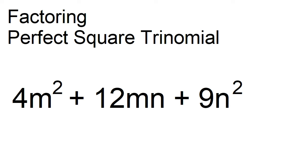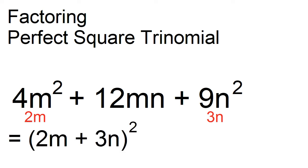Factor 4m squared plus 12mn plus 9n squared. The positive square root of 4m squared is 2m, and the positive square root of 9n squared is 3n. Therefore, 4m squared plus 12mn plus 9n squared is equal to the square of the quantity 2m plus 3n.